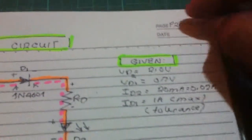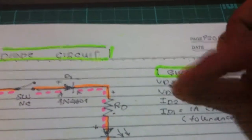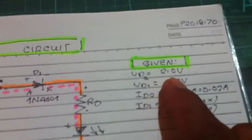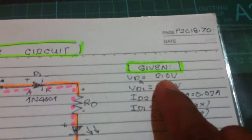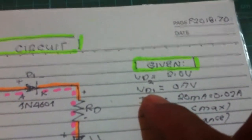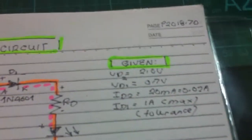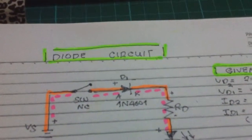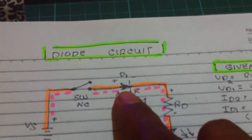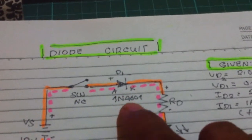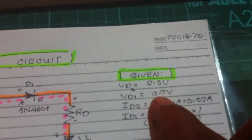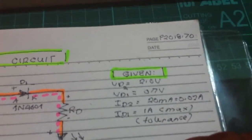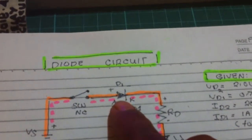The given values: voltage at diode D2 is 2 volts - that is the voltage required to turn on the LED. When it is turning on, the voltage drop across the LED is 2 volts. Voltage at D1 is 0.7 volts - that is the voltage required to turn on the 1N4001 diode.